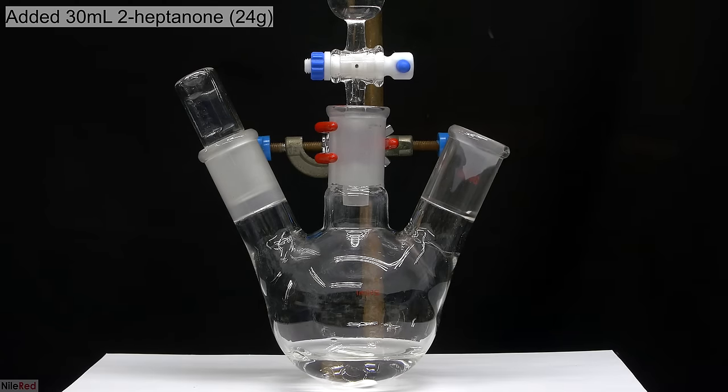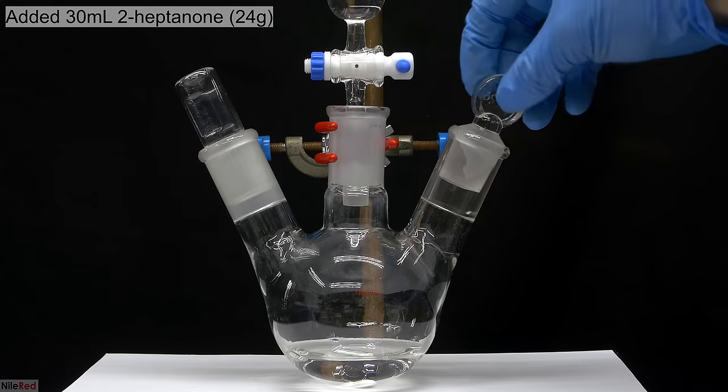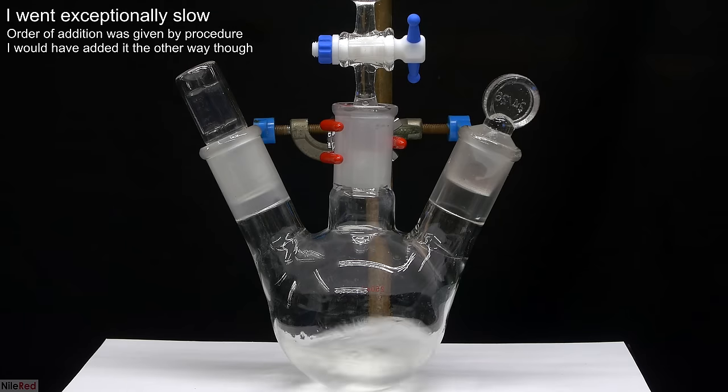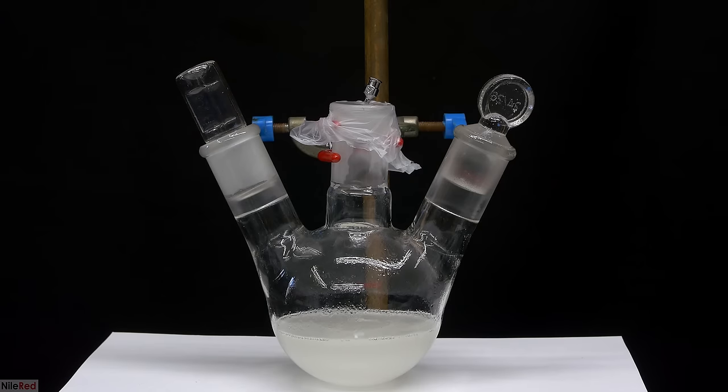After all of the 2-heptanone had been added, I stoppered the flask. I turned on some strong stirring, and then I opened the addition funnel to slowly add the solution into the 2-heptanone. I added everything over the course of something like 30 minutes to an hour, but I probably could have added it much quicker. Once everything had been added, the addition funnel was removed, and things were allowed to stir for about 5 hours.